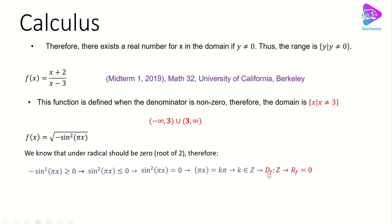From there, we can say that the domain of this function is the set of integer numbers. And the range of this function — because whatever you plug in gives zero inside the square root — the range is going to be just zero. So now we have a good understanding of what domain and range are.